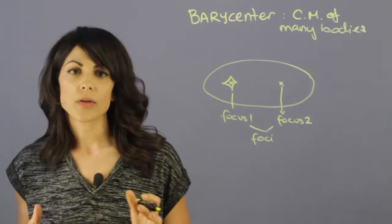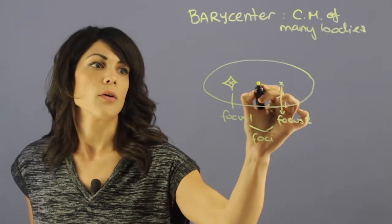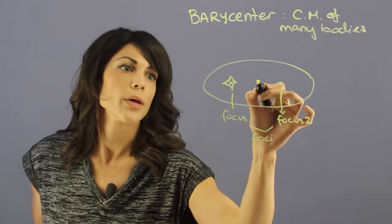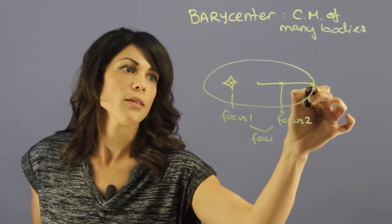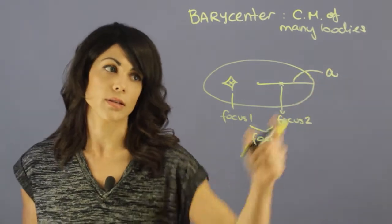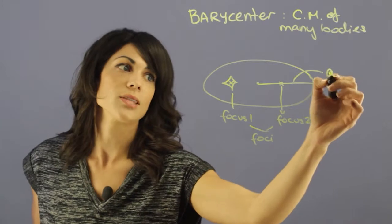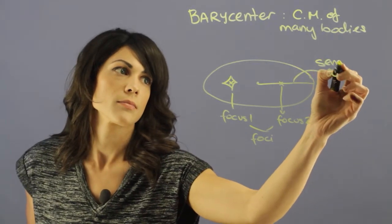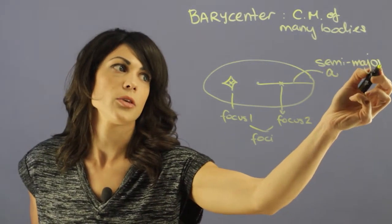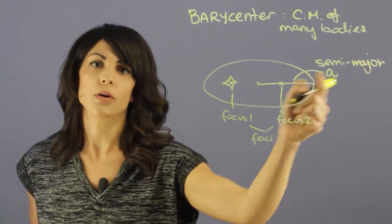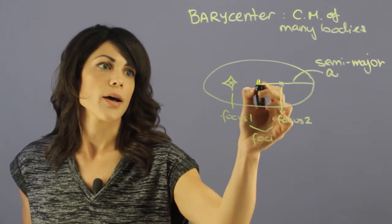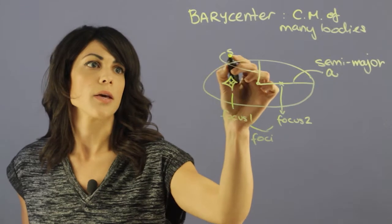Now, one thing that you have to know is that we have two different types of measurements here. We have this length, which is denoted as A, and this is the semi-major axis — something that you will hear all the time. And then here we have the semi-minor axis.